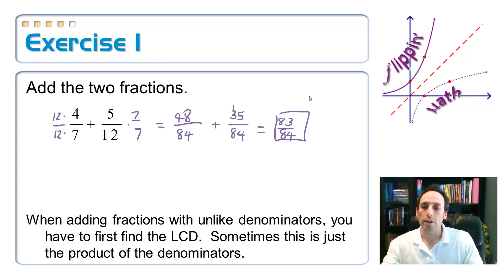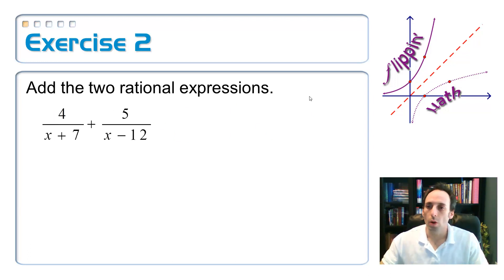So when adding fractions that have unlike denominators, you have to first find the LCD, least common denominator. We may not have found the least common denominator. Actually, on this one we did. But sometimes, you just times the two denominators and you have a common denominator. It may not be the least common denominator.